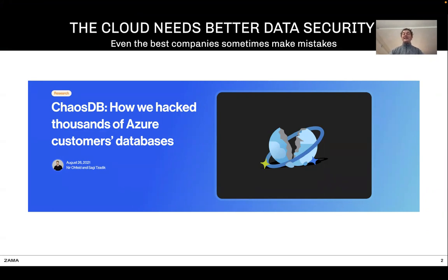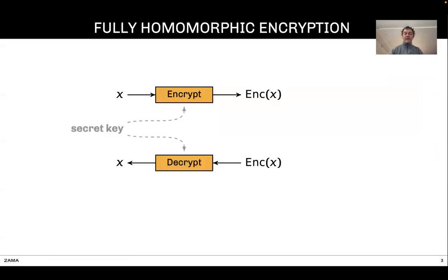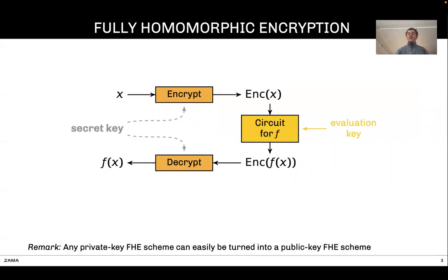One way to address that issue would be to rely on fully homomorphic encryption, or FHE. What is exactly FHE? FHE is encryption, meaning there is a key to encrypt and decrypt. But there is more: there is also a public evaluation key that allows anyone, given the encryption of x, to get the encryption of f(x).